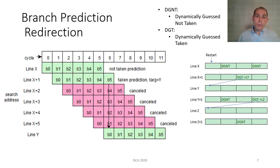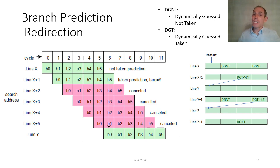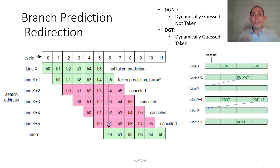Let's take a look at an example to see the pipeline with its internal self-redirection in action. Consider a pipeline restart to the beginning of line X. Within line X, there are two dynamically guessed not-taken (DGNT) branches. It isn't until line X+1 where there is a dynamically guessed taken (DGT) branch to line Y. The branch prediction pipeline starts searching line X. Once it gets to the B5 cycle, it makes a prediction bundle with two DGNTs. Since we search 64-byte sections each cycle, the predictor automatically started searching line X+1 in cycle one. This search found the DGT to line Y, with its prediction bundle presented in cycle six. In that same cycle, the branch predictor redirected itself to start searching within line Y. Meanwhile, sequential searches for lines X+2 to X+5 are cancelled.